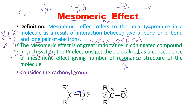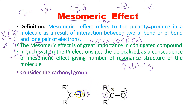As the number of resonance structures increases, the stability of a molecule increases. In conjugated systems there can be many more resonance structures. Here with only one pi bond, there are two resonance structures — one original and one resonating form. Delocalization of pi electrons causes these resonance structures.